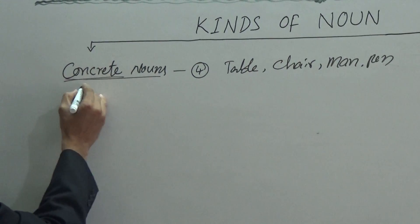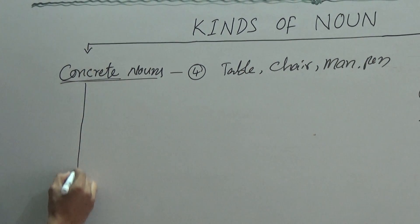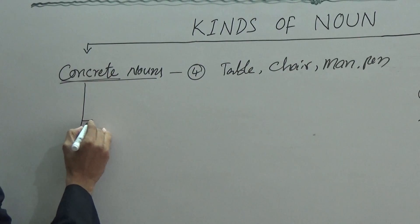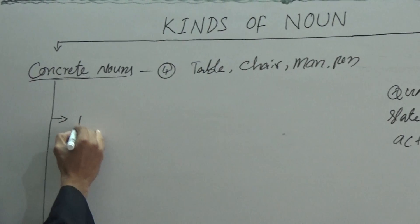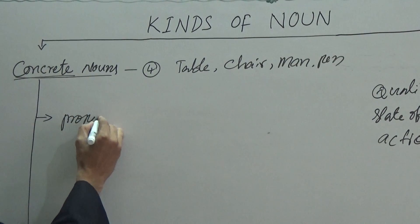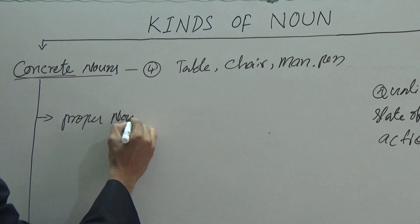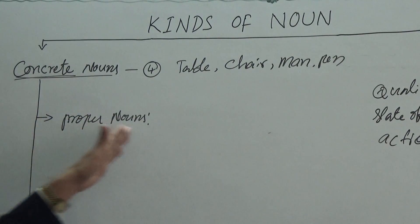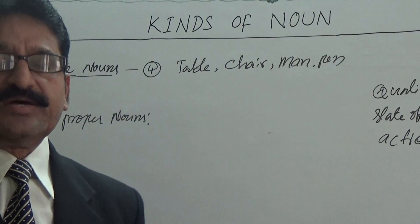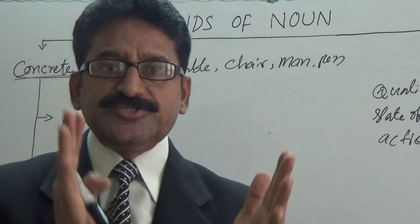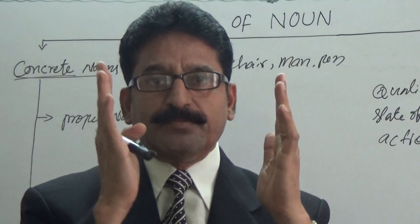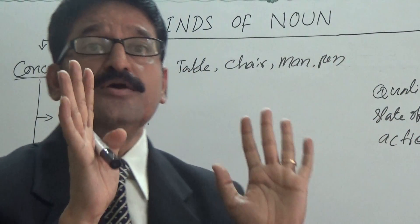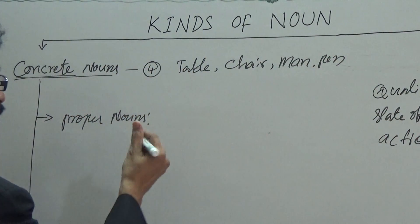These concrete nouns are divided into four kinds. The first one is proper nouns. Proper nouns are the particular or individual names of persons, places, things, or animals.